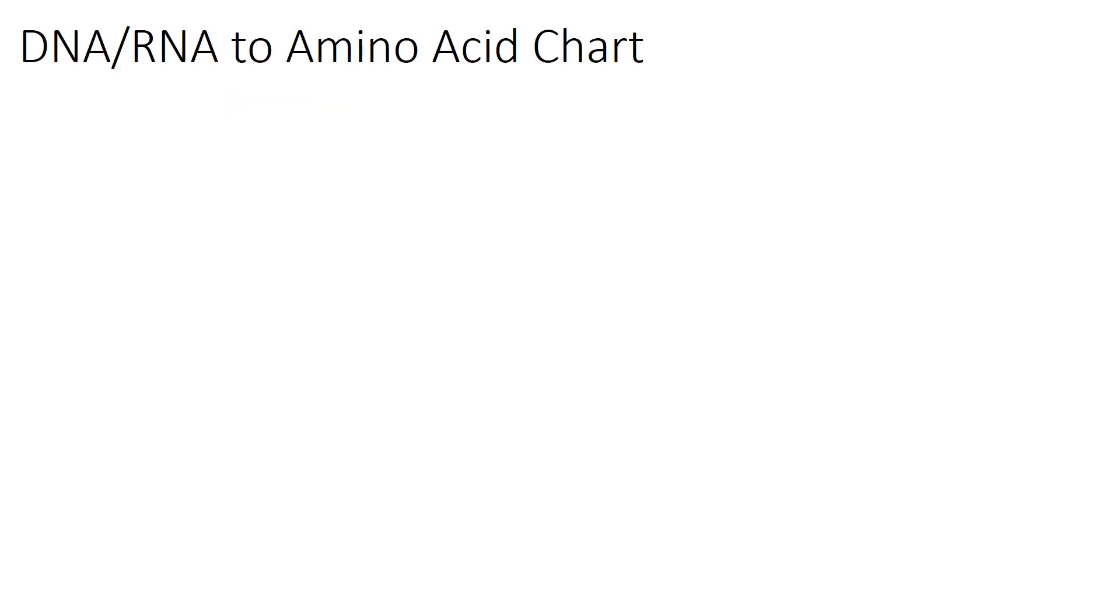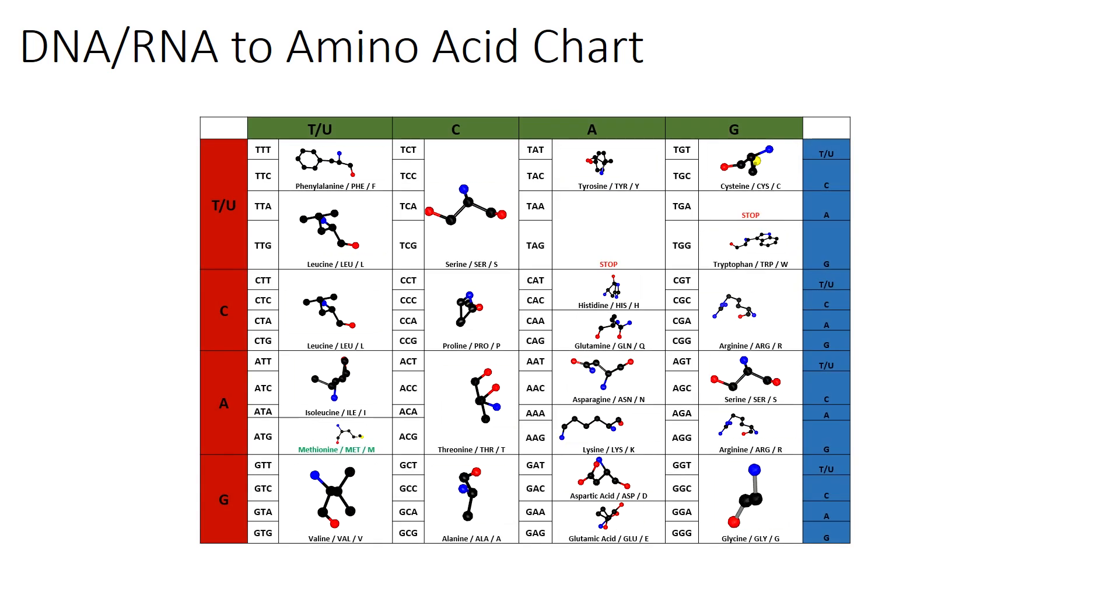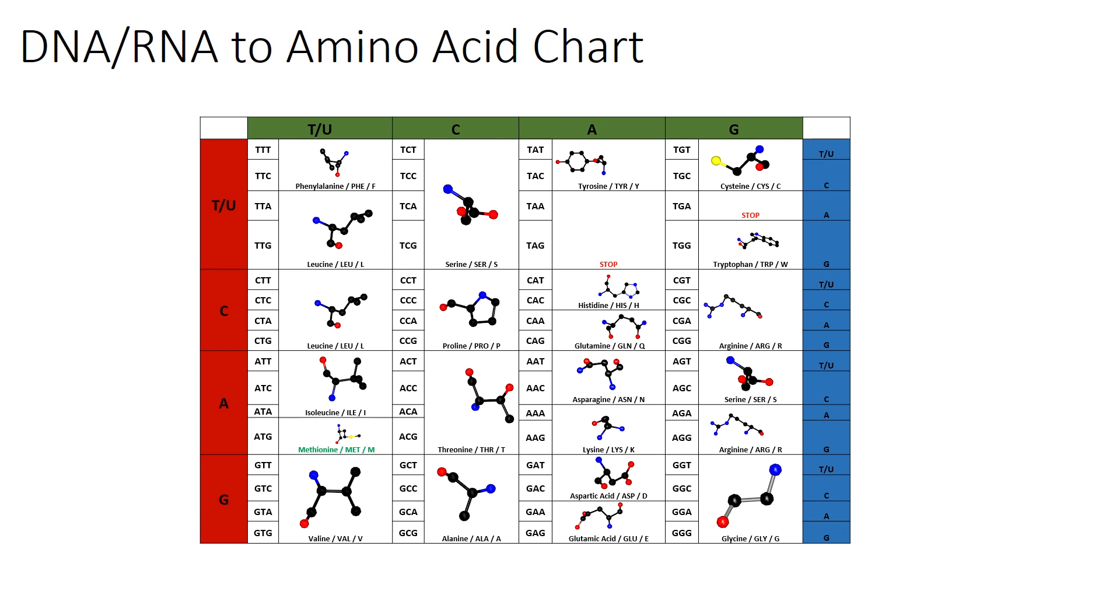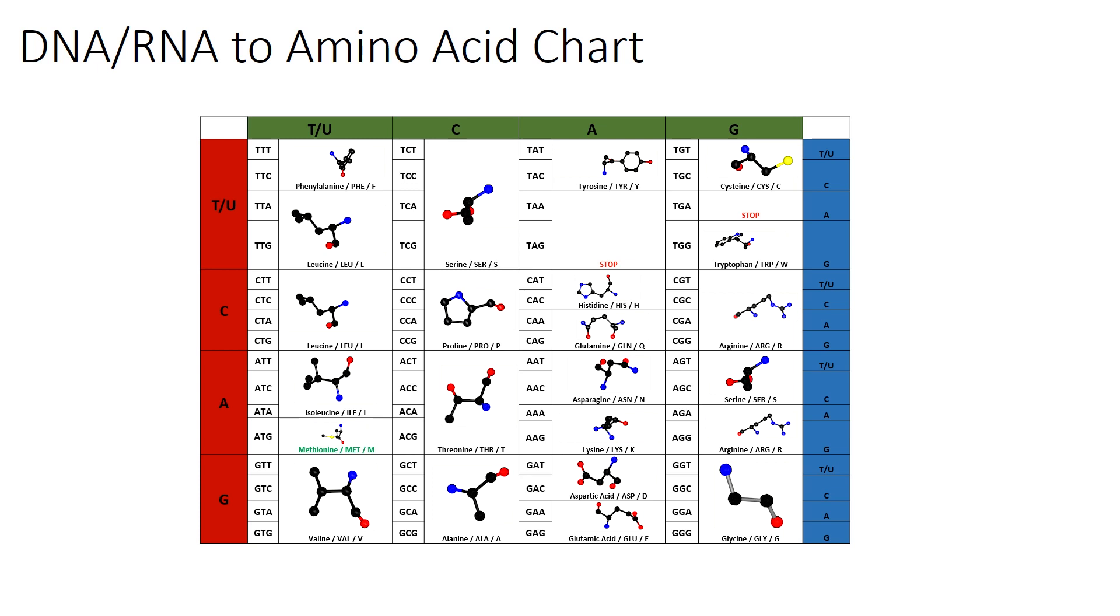The outcomes of all of the combinations are summarized in this table here, which scientists use when they design DNA fragments for research, or when they want to see what effects a genetic mutation can have on a protein of interest.